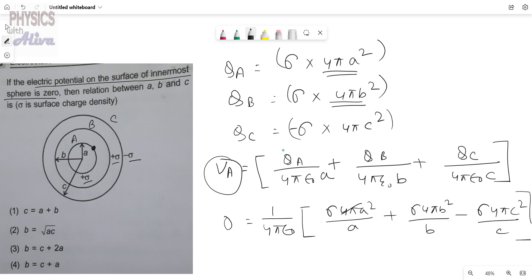So this 4π will cancel out with the 4π. And this A will cancel out, B will cancel out and C will cancel out.